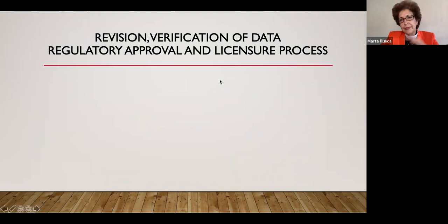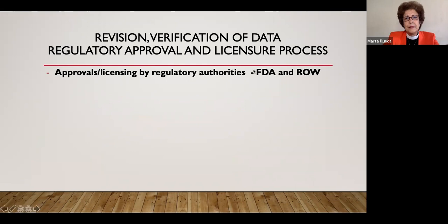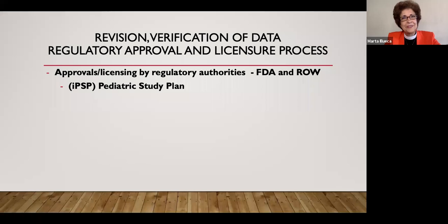Then comes the period of regulatory revision, which is sometimes poorly understood. This is done in the U.S. by the FDA, in Europe by the European Medicines Agency, and the rest of the world has their own regulatory bodies. In the United States, every product proposed for treating or preventing a disease is also required to submit what's called a pediatric study plan. Pediatric studies are not allowed until there is approval for adults.